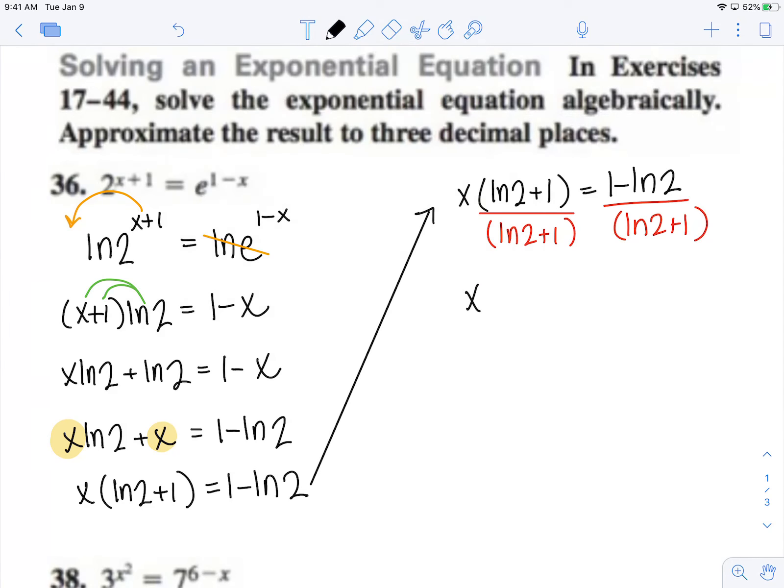So now I have x equals 1 minus ln 2 over ln 2 minus 1, and I can get my decimal approximation. Oops, I'm sorry, ln 2 plus 1.